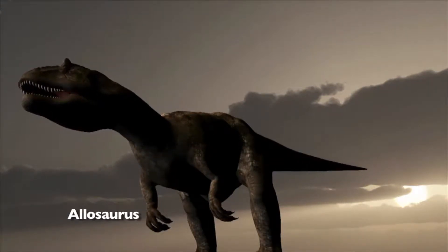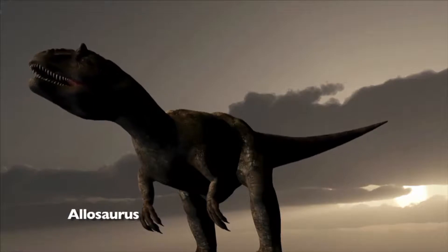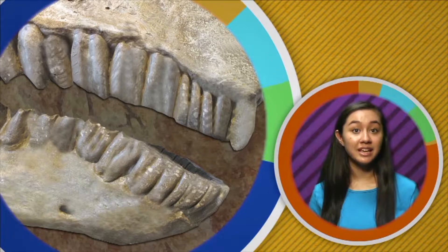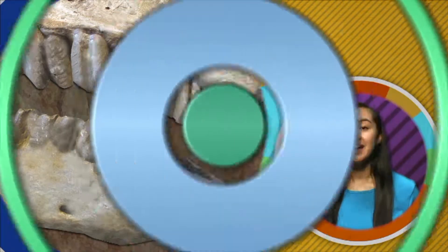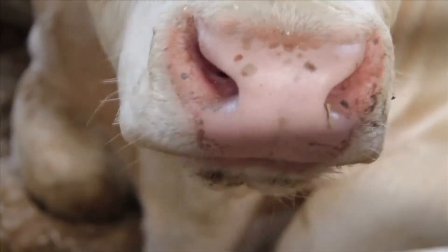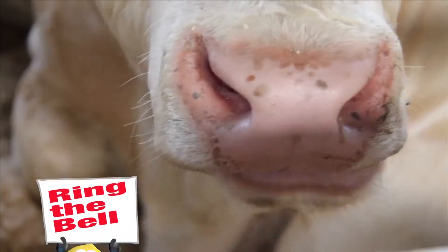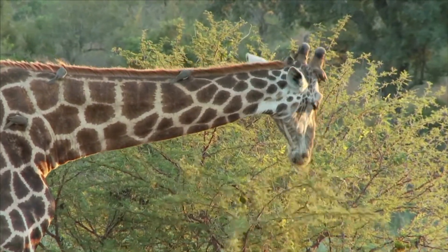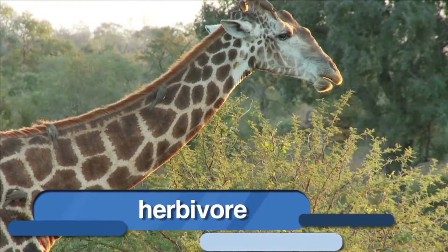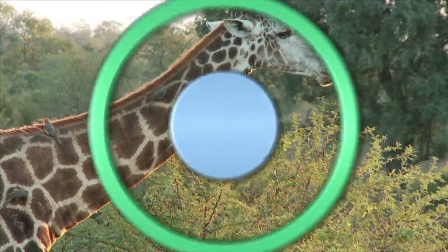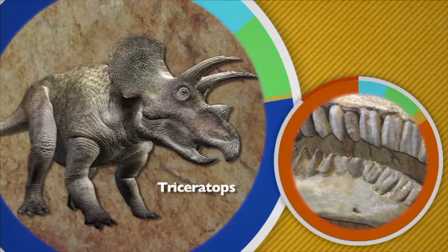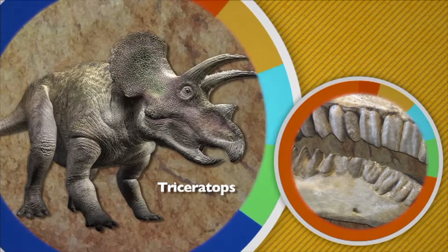Notice its sharp pointy teeth. Paleontologists have also found dinosaur fossil teeth that are round and flat. Today, animals with flat, round teeth like cows, elephants, and giraffes are plant eaters. Plant eaters are known as herbivores. So it makes sense that a dinosaur with flat, round teeth like Triceratops ate only plants too.